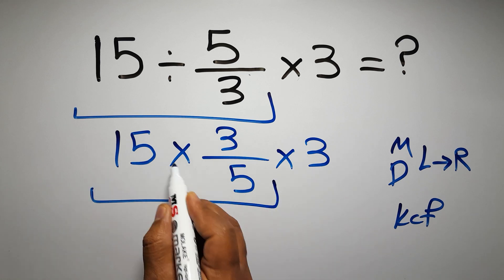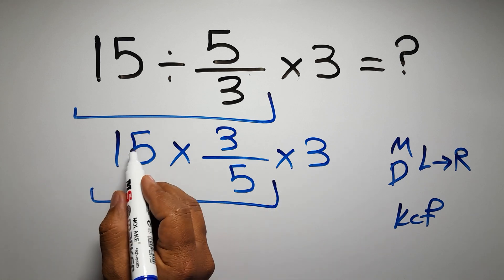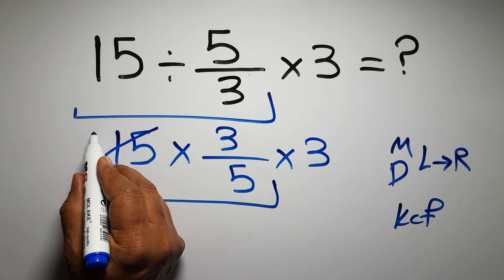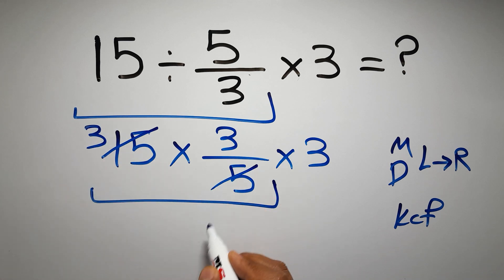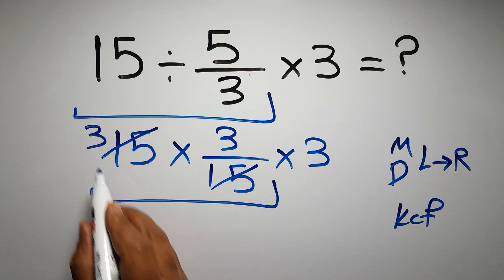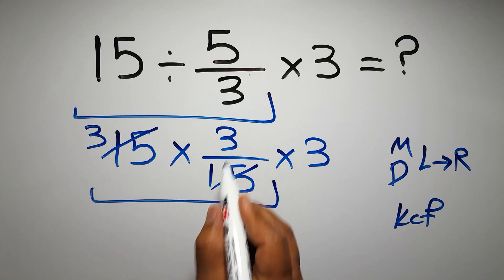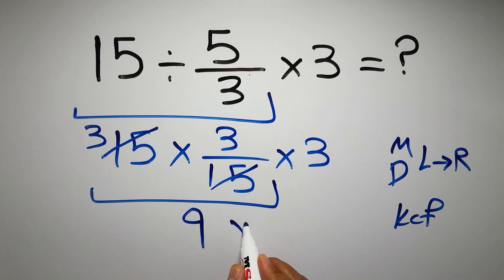First this multiplication: 15 divided by 5 gives us 3, and 5 divided by 5 is just 1. So we have 3 times 3 which equals 9, and 9 times 3 gives us 27.